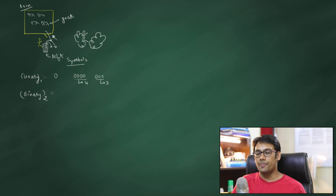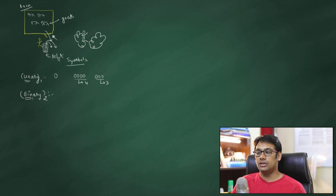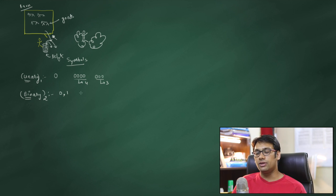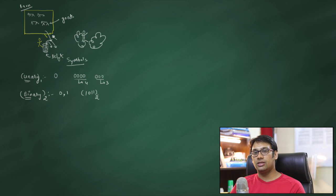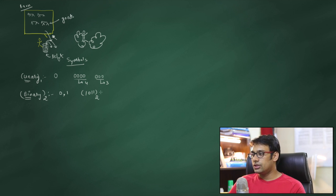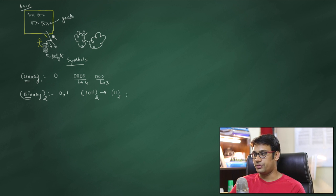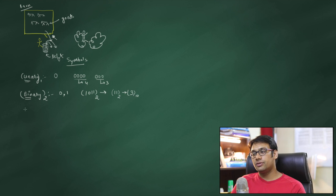The second kind is the binary number system, with a base equal to two. Binary means we are going to use two symbols: zero and one. Every number will be a combination of zero and one — for example, 1011. These symbols by themselves have no intrinsic meaning; they form together to represent a number. For example, the binary number 11 with base two represents the decimal value three.